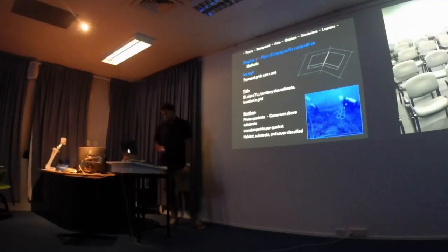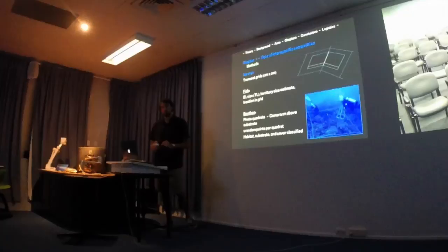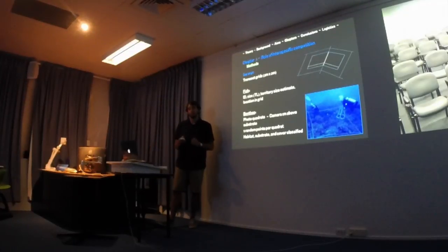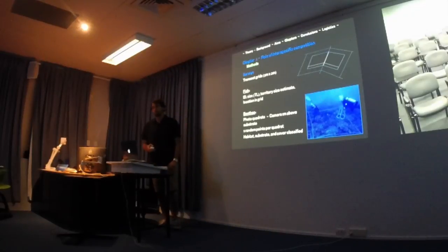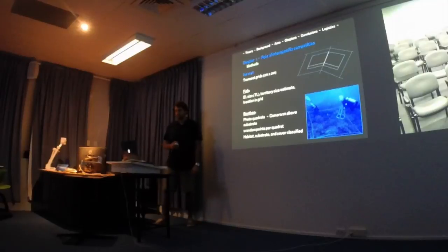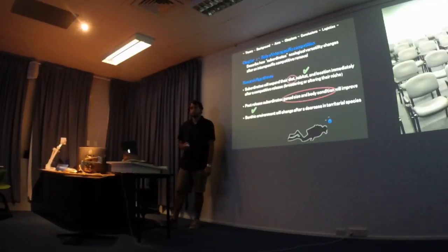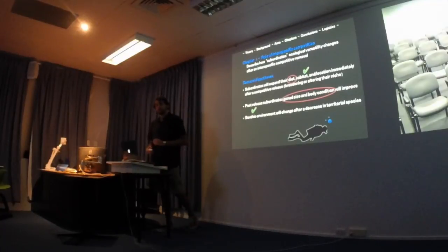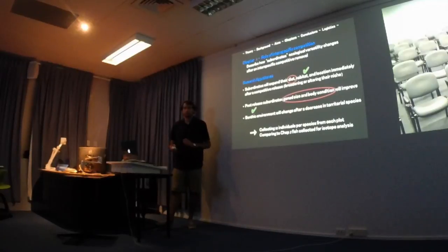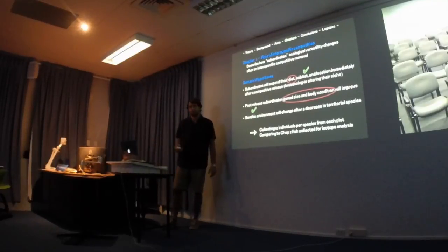For surveys within the plots, I'll do transect grids in 2 by 2 meter sections, recording fish ID, size, territory, habitat use, and location within the grid. Using ArcGIS, I can plot locations into minimum convex polygons to track movement over time. For the benthic environment, I'll do photo quadrats to assess habitat, substrate, and cover. For diet and body condition changes, I'll collect 12 individuals per species at the end of the experiment and compare them to the chapter one fish, as a proxy for fitness change.